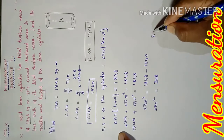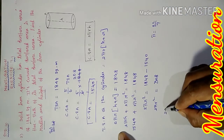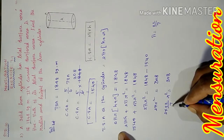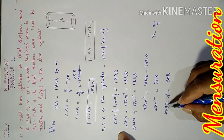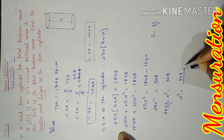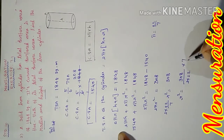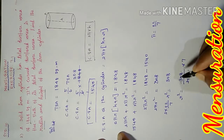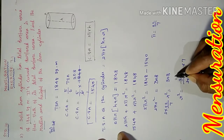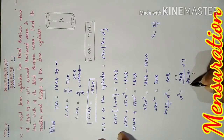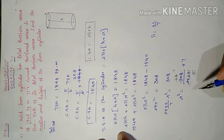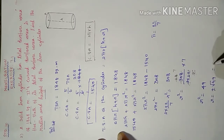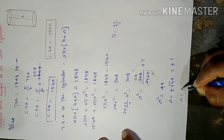Dividing both sides: 2πr² = 308. Substituting π = 22/7, we get 2 × (22/7) × r² = 308. Solving for r²: r² = 308 × 7 divided by (2 × 22) = 49. Taking the square root, r = √49, therefore r = plus or minus 7. Since radius must be positive, r = 7 meters.